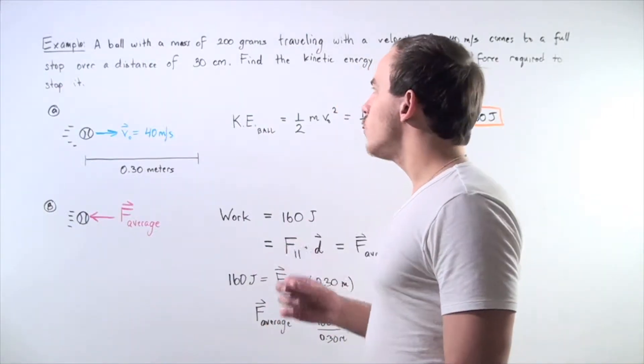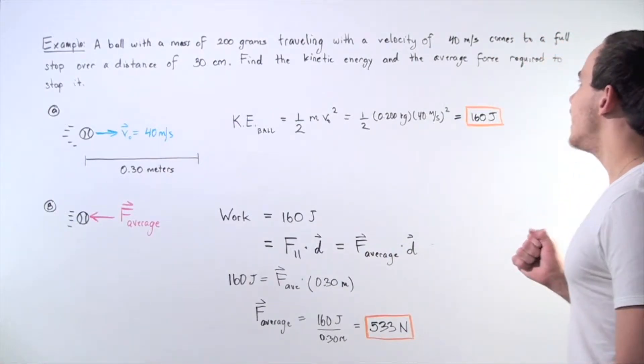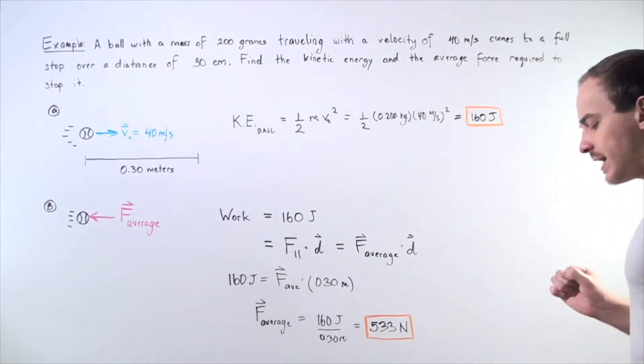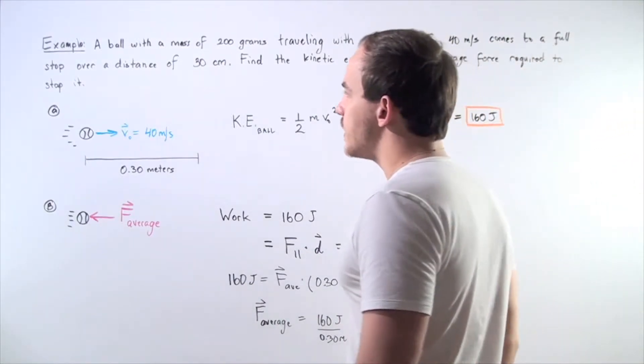Let's suppose that a ball with a mass of 200 grams is traveling with a velocity of 40 meters per second and comes to a complete stop over a distance of 30 centimeters.